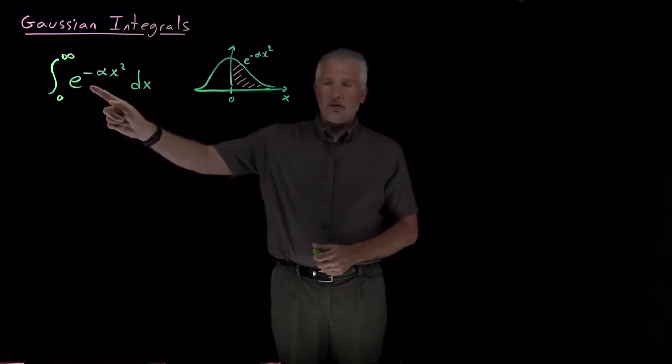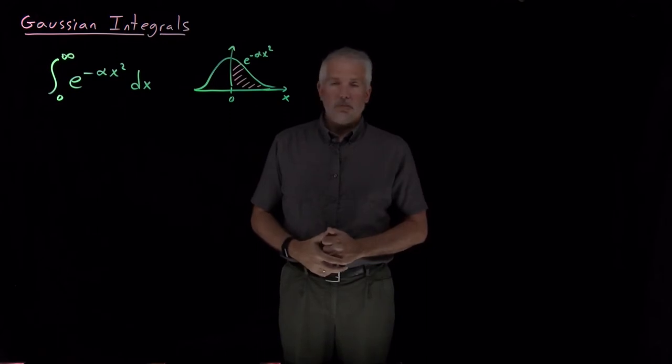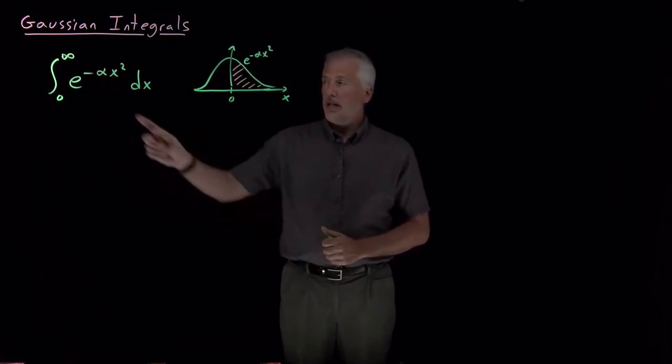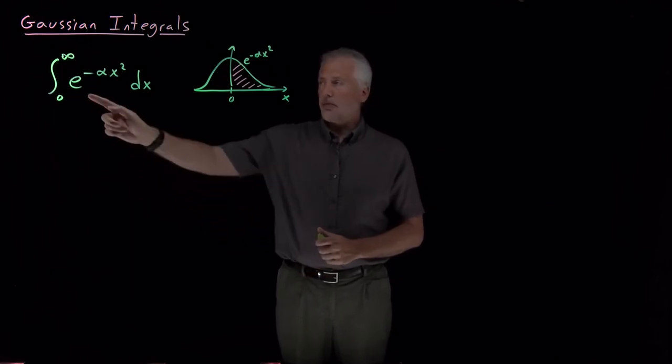The reason this integral shows up so often is because we're very commonly taking the exponentials of things, perhaps because we're doing Boltzmann probability distribution e to the minus some energy over kT, which causes an integral to look like this, or there's also certain quantum mechanical problems that have Gaussian integrals in them as well.